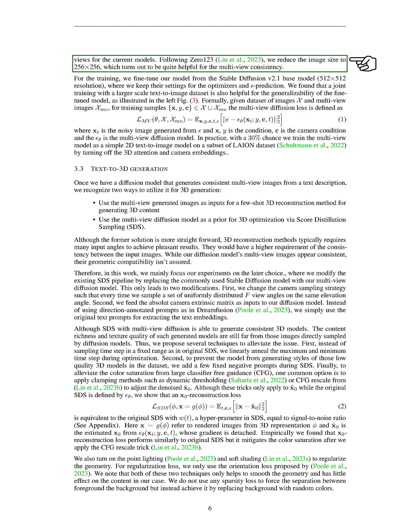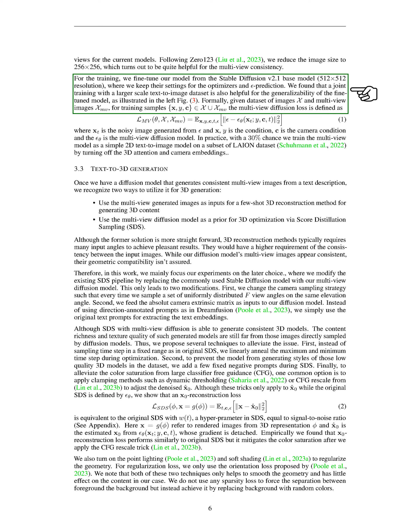Following the approach of 0123, we reduced the image size to 256 by 256 pixels, which greatly improved the multi-view consistency. For training, we fine-tuned our model from the Stable Diffusion version 2.1 base model, keeping their settings for the optimizers and epsilon prediction. We found that joint training with a larger-scale text-to-image dataset improved the generalizability of the fine-tuned model. Formally, the multi-view diffusion loss is defined as the expectation of the square of the difference between the actual noise and the noise predicted by the multi-view diffusion model, given the noisy image, the condition, the camera condition, and the time. In practice, we train the multi-view model as a simple 2D text-to-image model on a subset of the LAION dataset by turning off the 3D attention and camera embeddings 30% of the time.